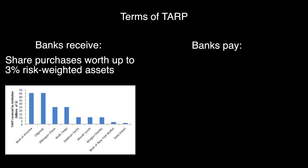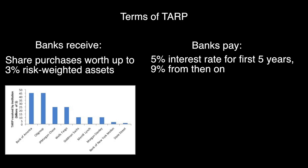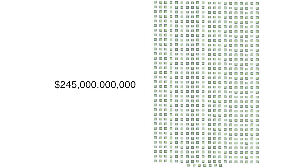In return, the banks would pay Treasury a 5% interest rate on those shares annually for the first five years, and 9% after that. In addition, the Treasury received the option to buy the bank's stocks at a relatively low price for the next decade, allowing U.S. taxpayers to reap some of the upside potential of saving the banking industry. A similar deal was offered to 8,500 smaller U.S. banks, although they had to apply for the funds. In all, the Treasury spent $245 billion buying shares in 707 financial institutions.